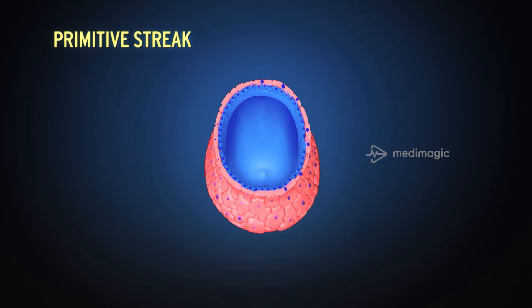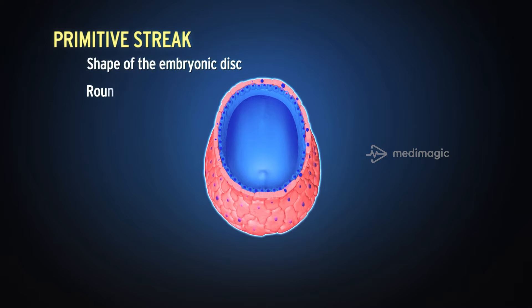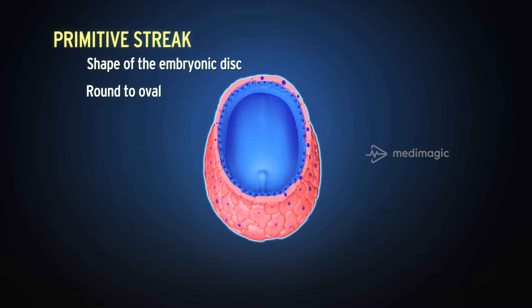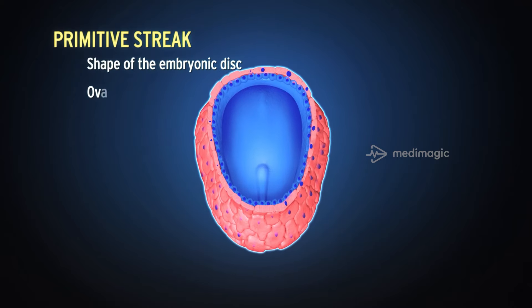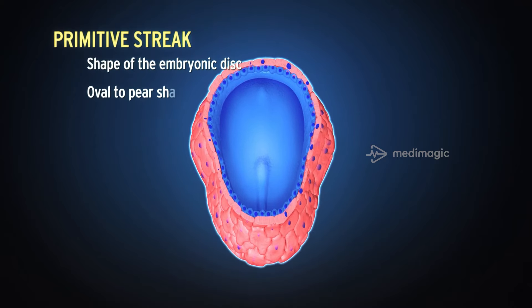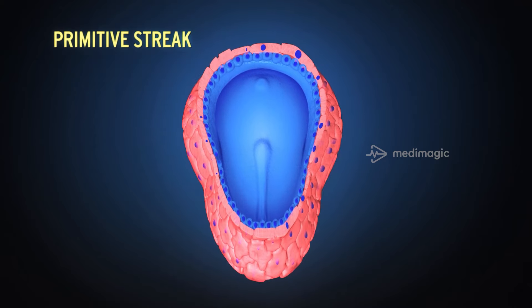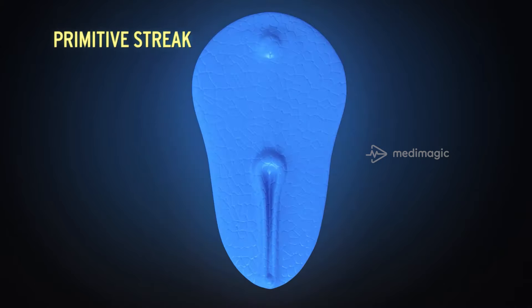As the cells of the epiblast migrate towards the primitive streak, the shape of the embryonic disc changes from round to oval, and then from oval to pear-shaped, with a broad cranial end and a narrow caudal end.